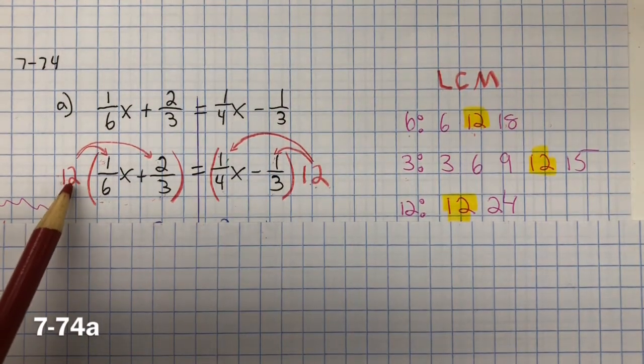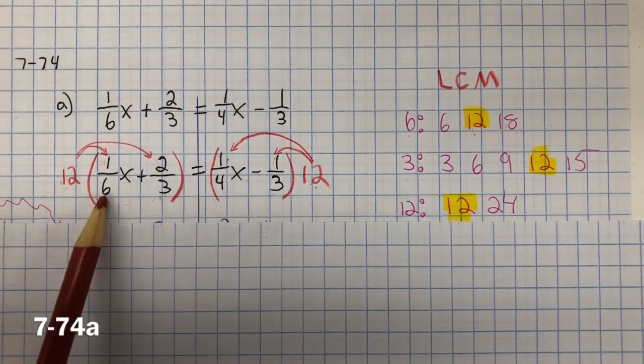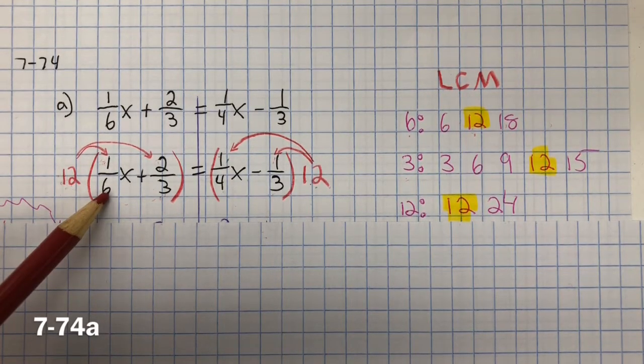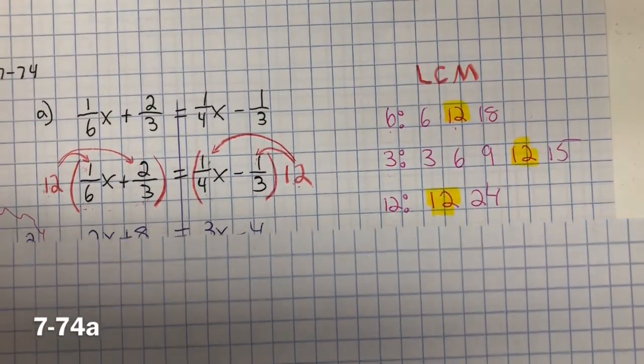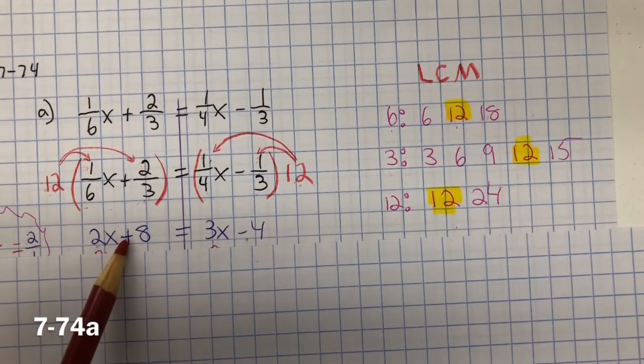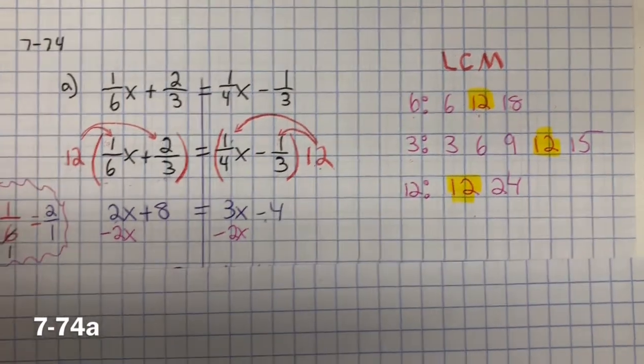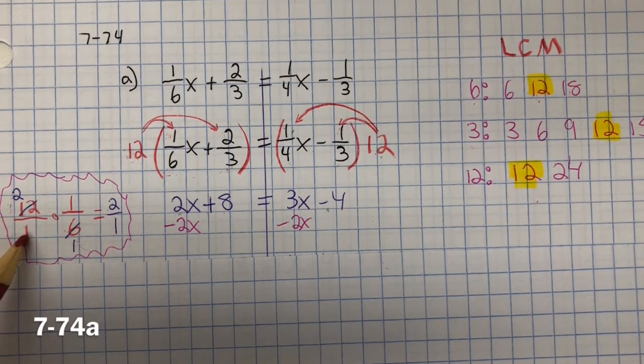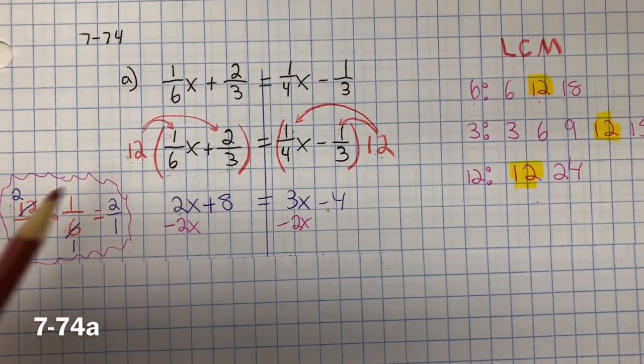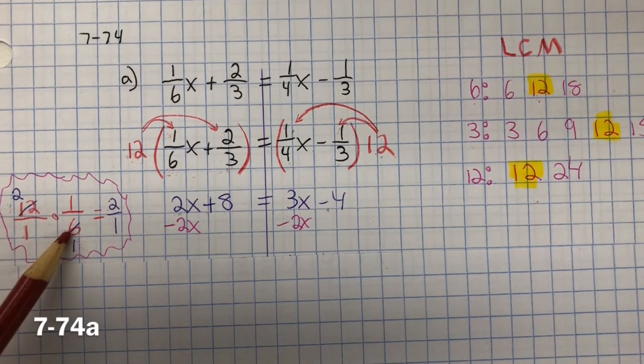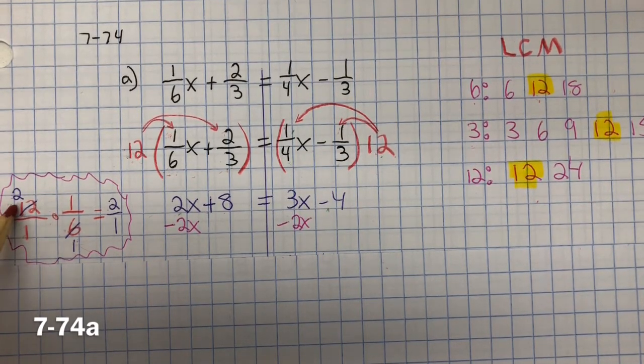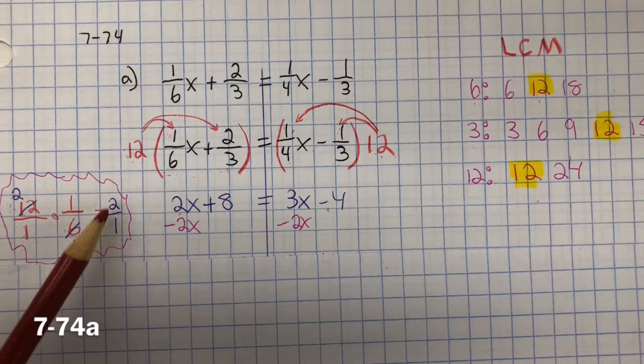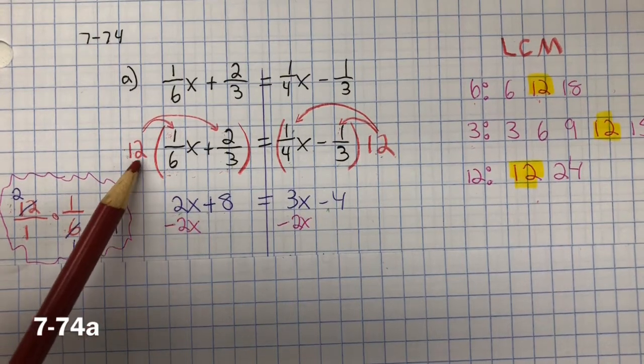So I'm going to multiply each term by 12 to eliminate the denominator. For the first term, 12 divided by 6 is 2. 2 multiplied by 1 is 2, and it would look like this: 2x. If that doesn't make sense, I'm showing it here. 12 over 1 multiplied by 1 over 6. Now I can cross-simplify. 12 divided by 6 is 2, and 6 divided by 6 is 1. So 2 multiplied by 1 is 2, 1 multiplied by 1 is 1, 2 over 1 is 2.